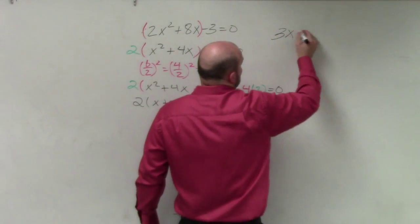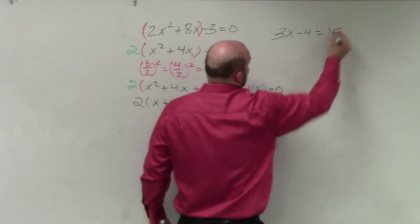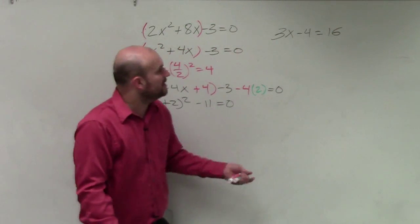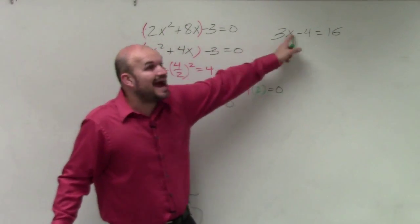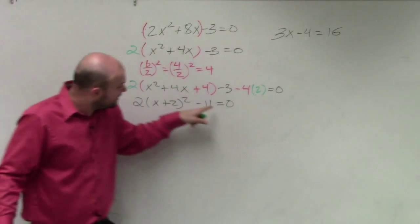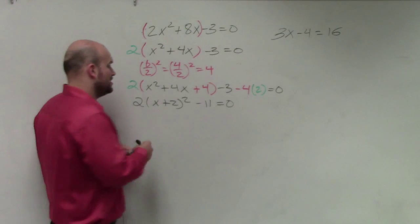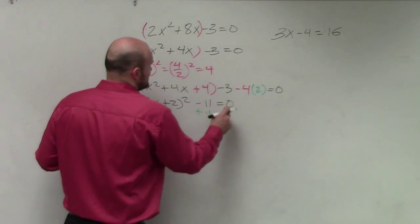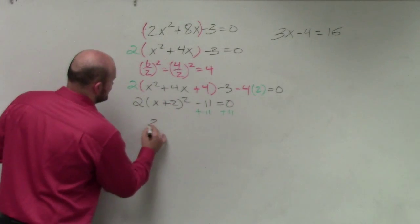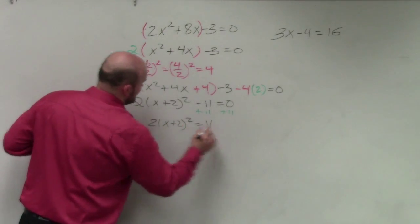Same thing. 3x squared minus 4 equals 16, or 17, whatever. What do you do first to solve? You add 4 to both sides, right? We're going to add the 11 before we divide by the 2. So I'll add an 11 on both sides. Then I have 2 times x plus 2 squared equals 11.